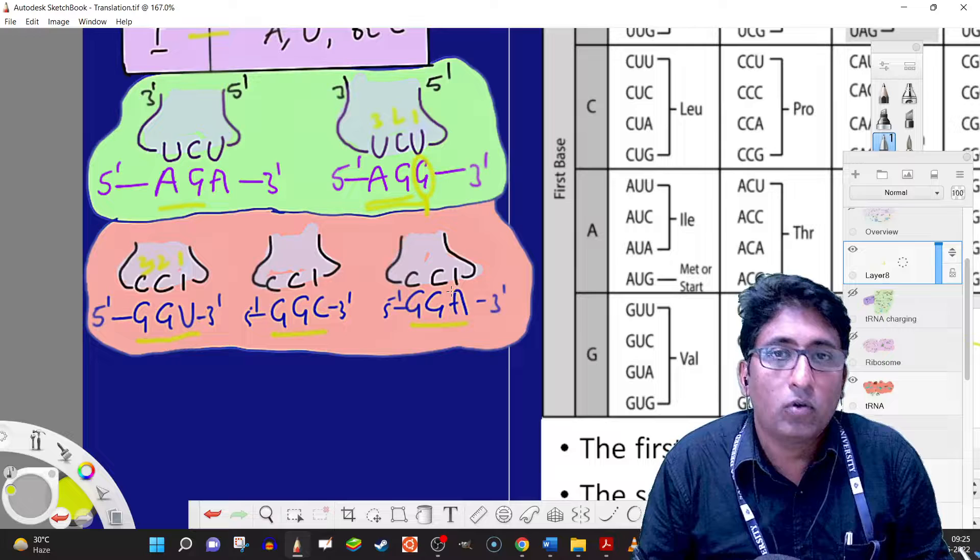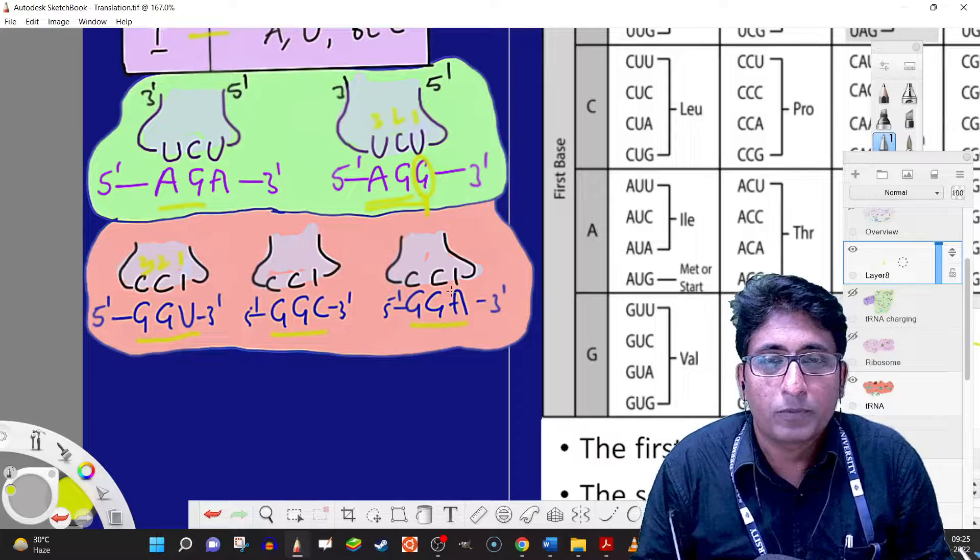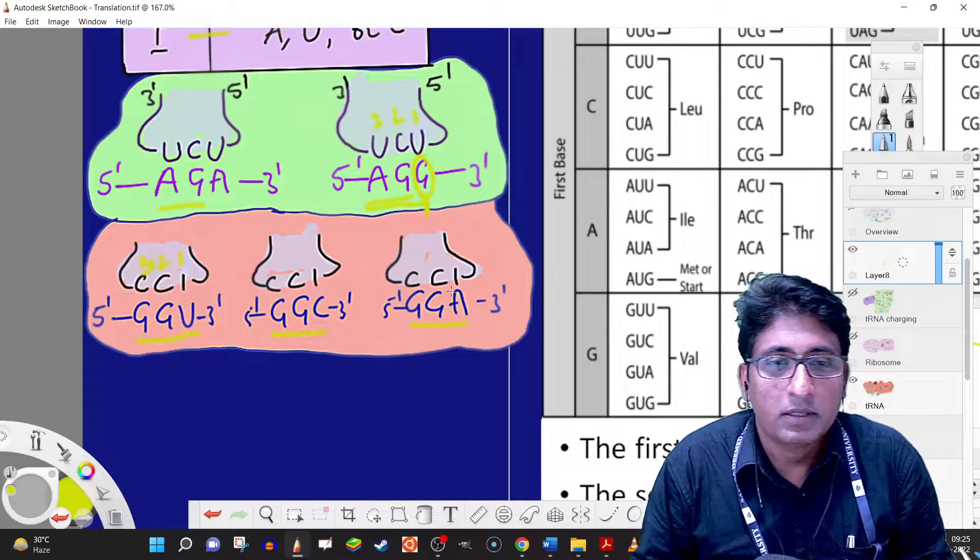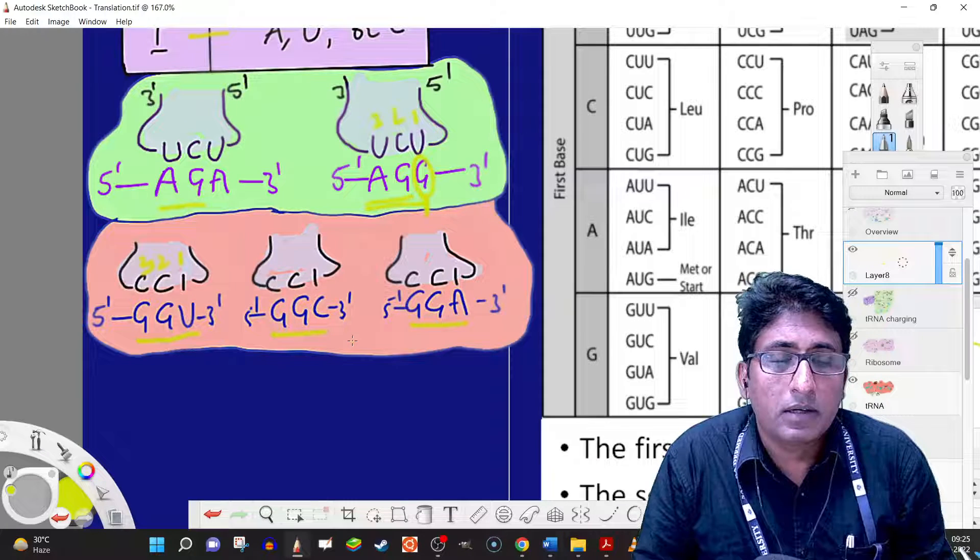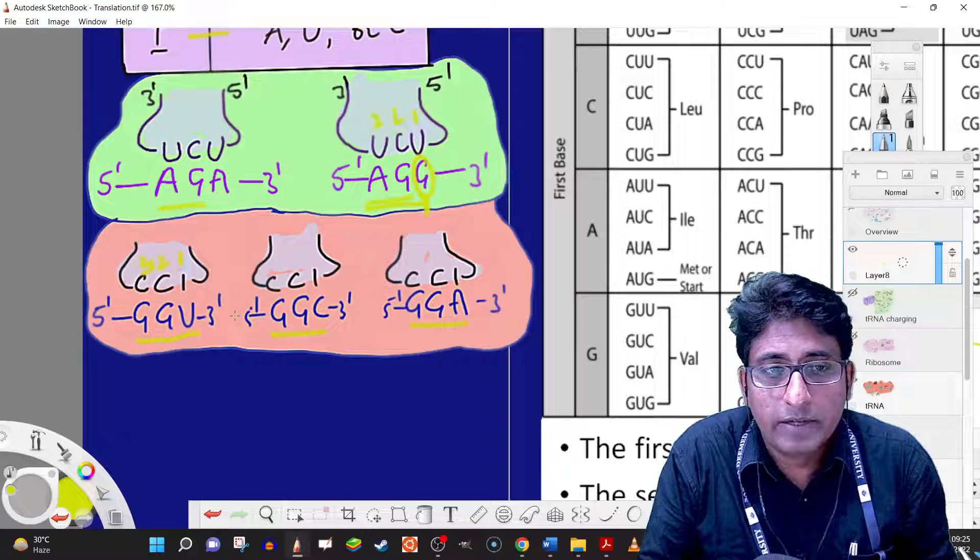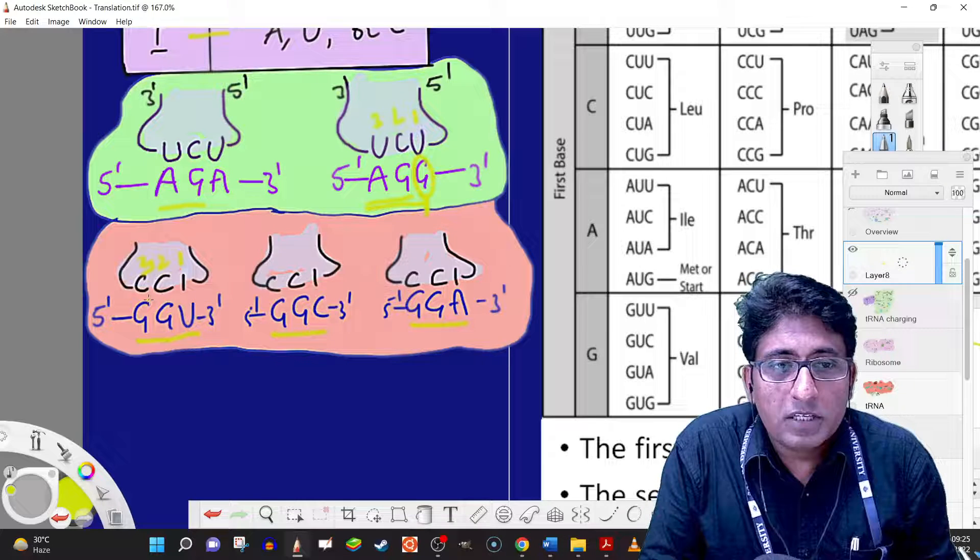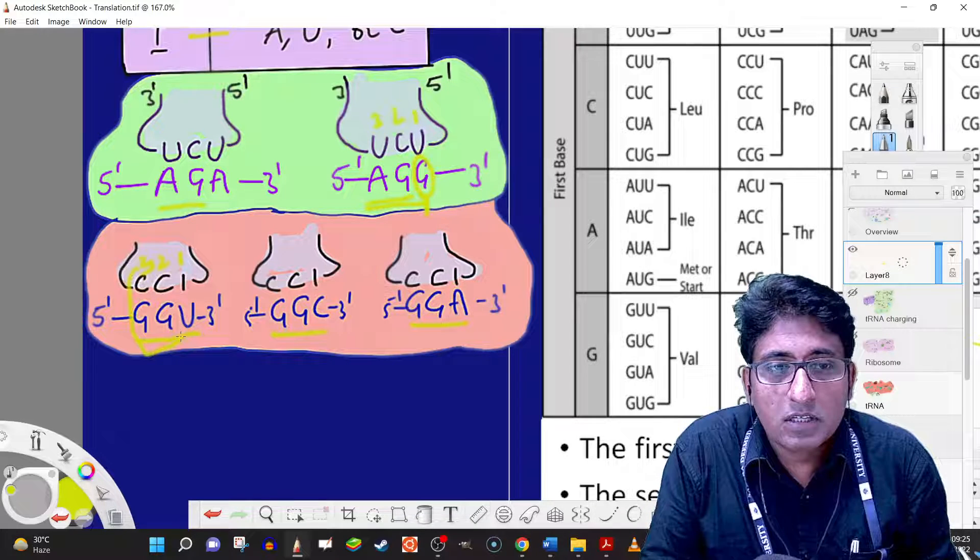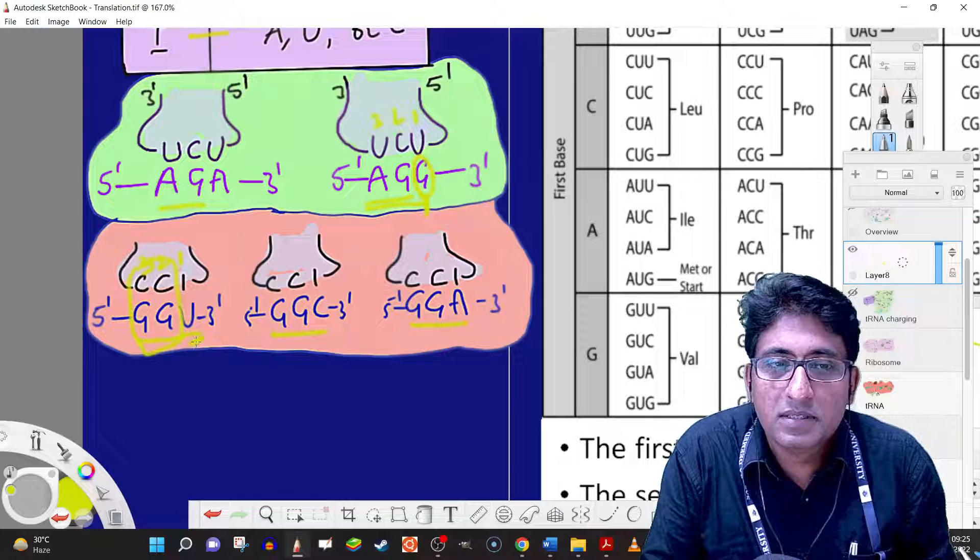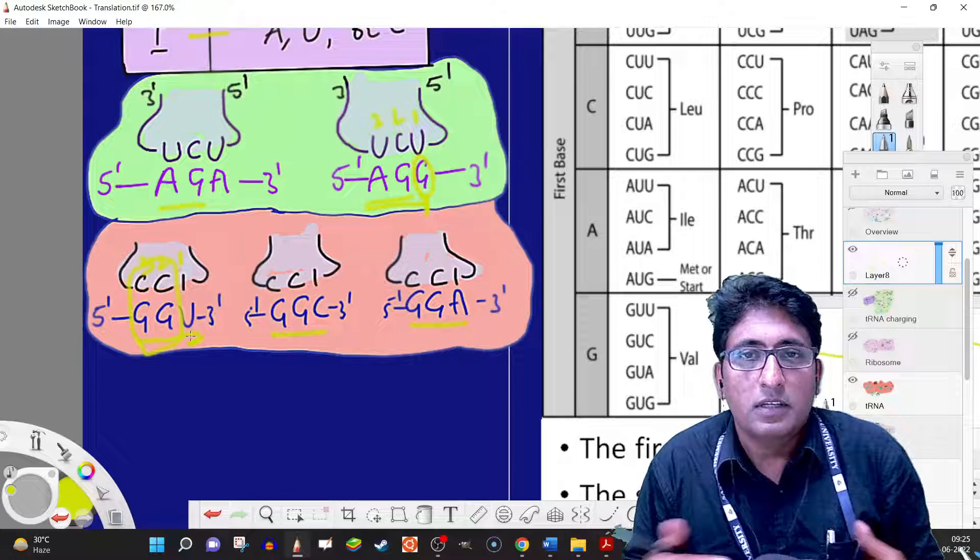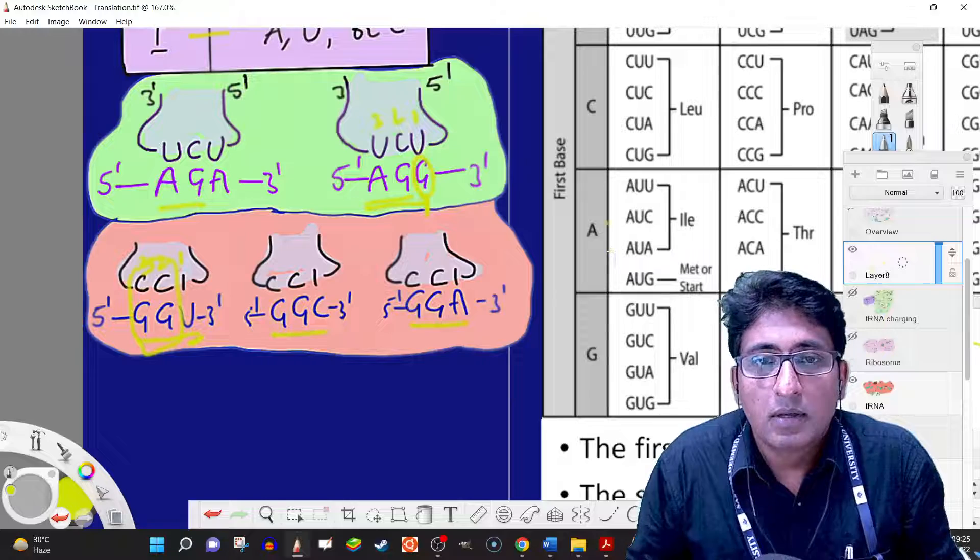All these three different codons can be recognized or base paired by one tRNA consisting of ICC, with inosine in the first position of the anticodon. The base pairing between the first two codon bases is important, and the third position has much more relaxation.